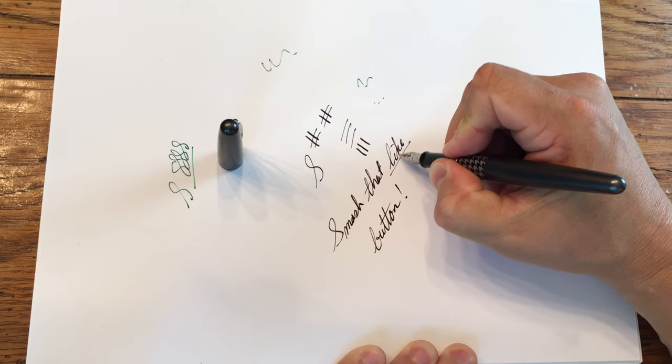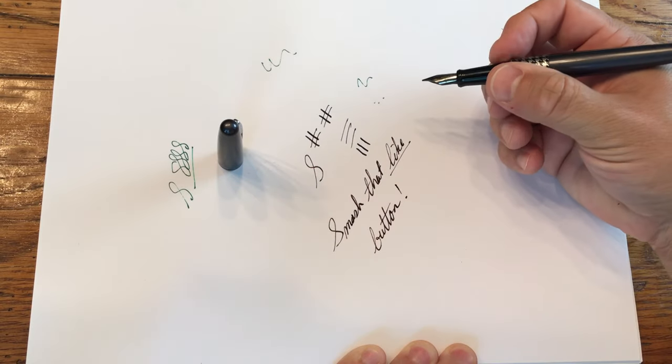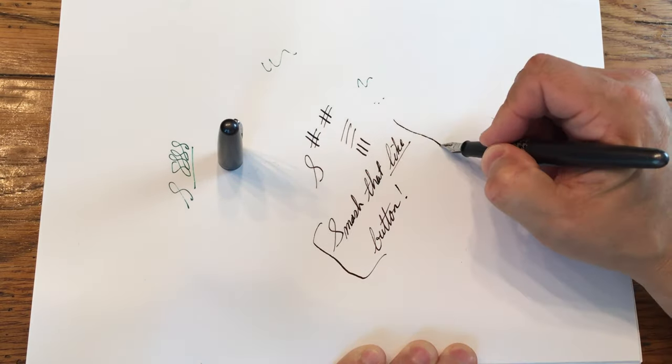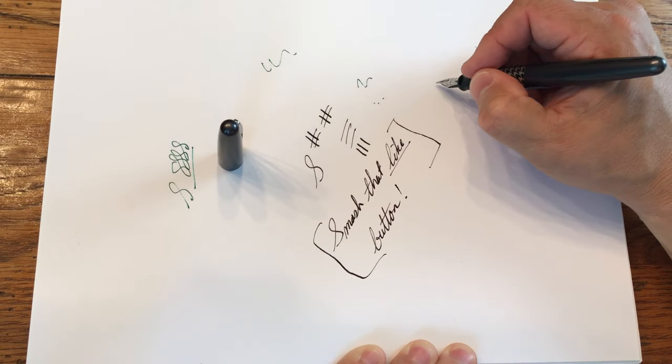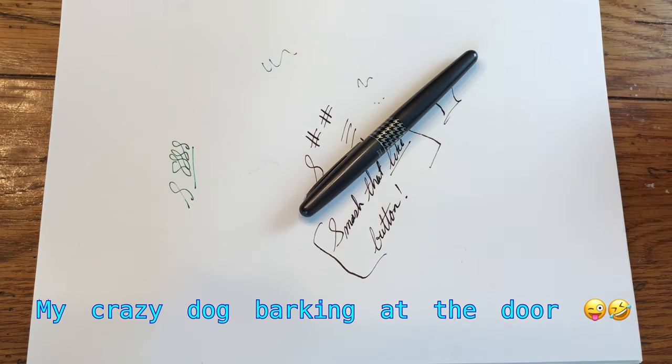You see these thin strokes on the left and the right, as you go left and right, but the thick strokes as you go up and down. If you would smash that like button for me, I would really appreciate it. You can turn on your notifications also.